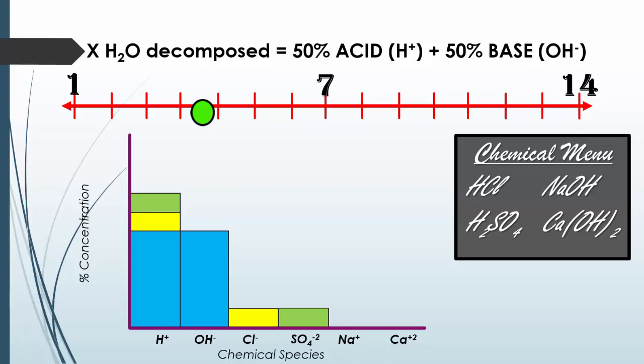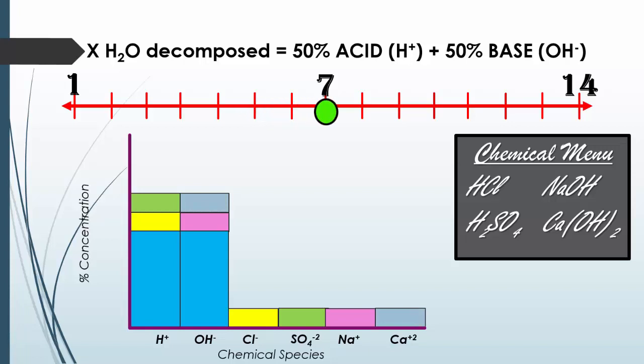So now if we have this very acidic solution and we add some sodium hydroxide, you'll notice our concentration of the hydroxides is now increasing, and we are shifting back towards neutral on the pH scale. The concentration of acid — the H+ ions — is still greater than the concentration of the OH ions.